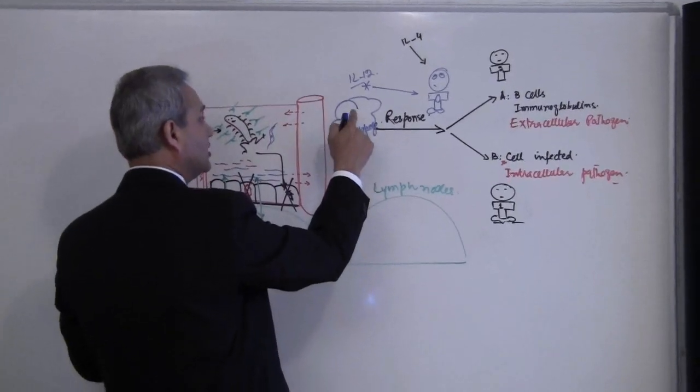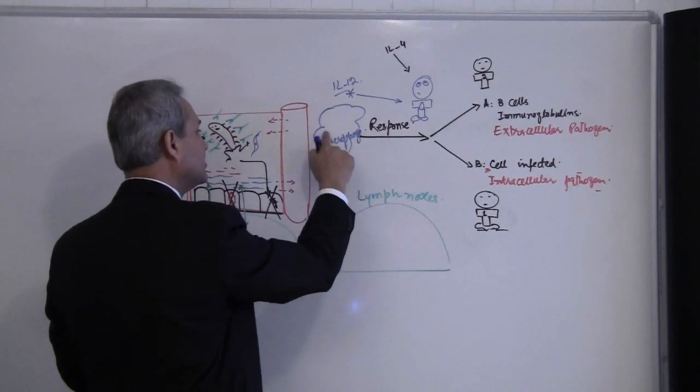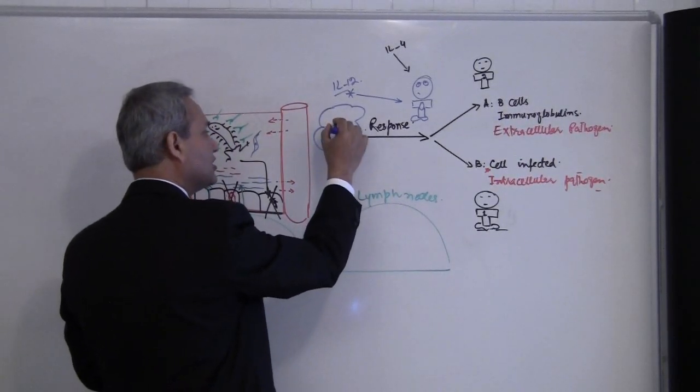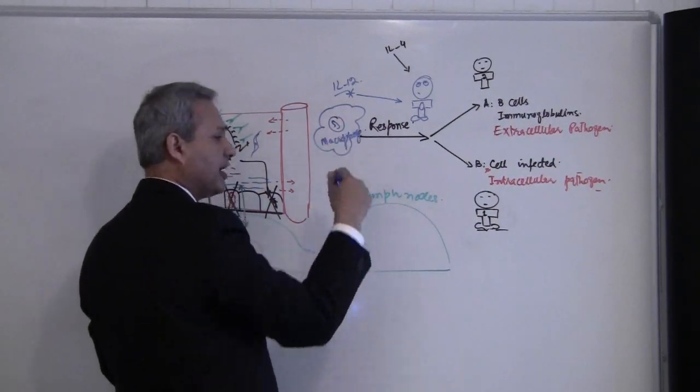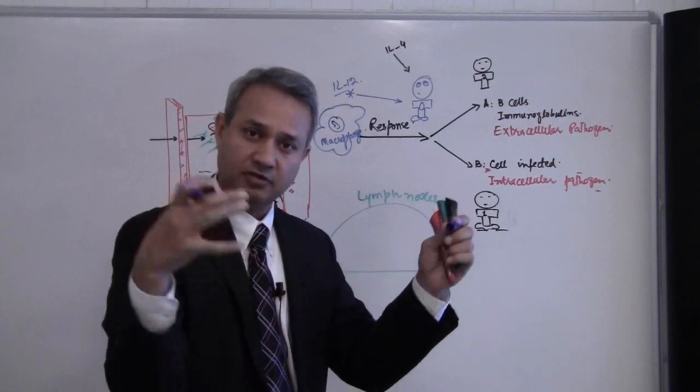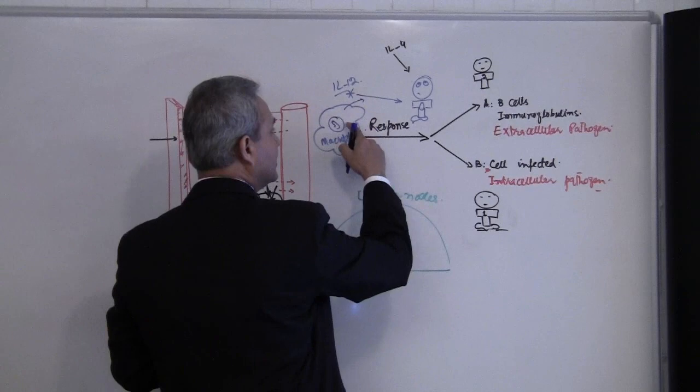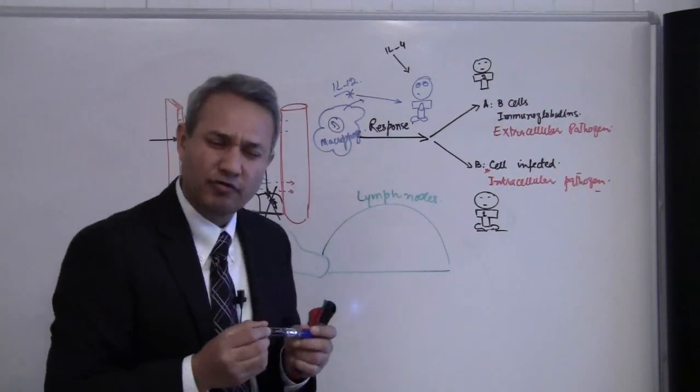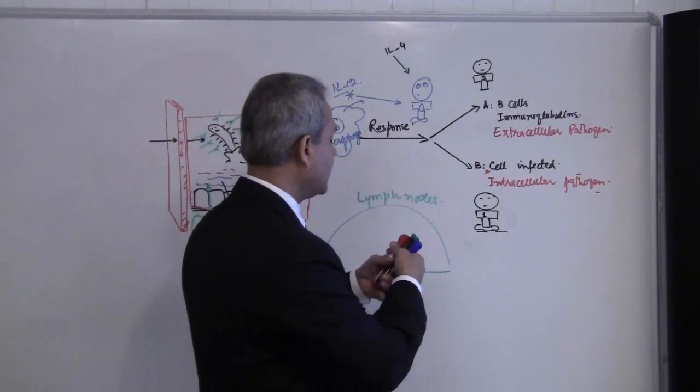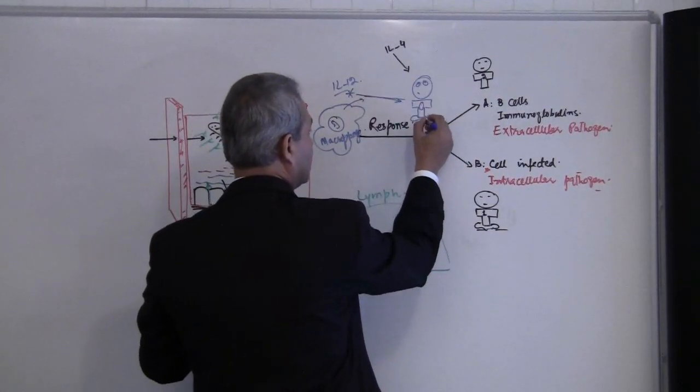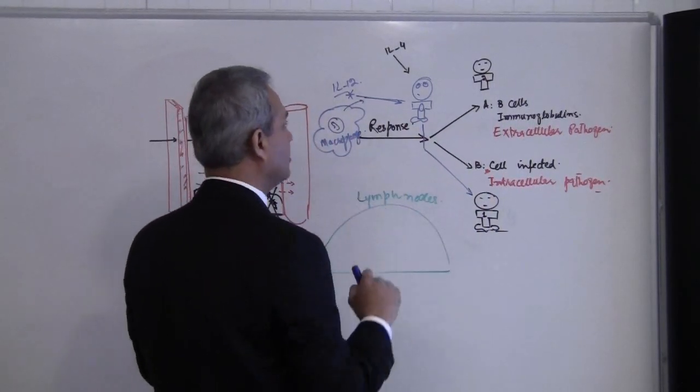When macrophage, as part of the innate response system, has phagocytosed the pathogen as part of the phagolysosomal activity of killing the pathogen, there is also secretion of IL-12. This IL-12,